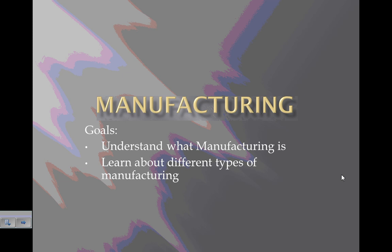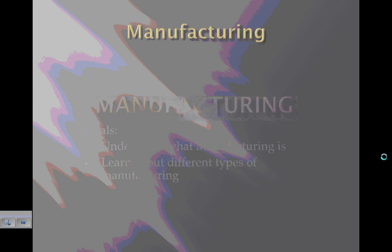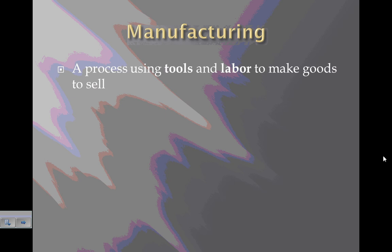Hello, today there's a quick review of manufacturing — understanding what manufacturing is, and then looking at a few different basic types of manufacturing. Manufacturing is a process using tools and labor to make goods to sell. In other words, it's when people make stuff.